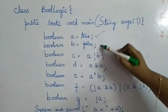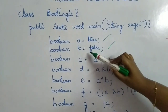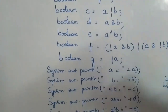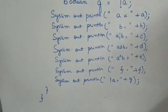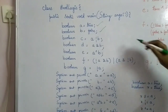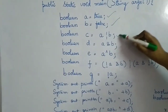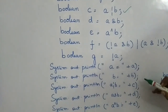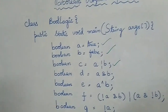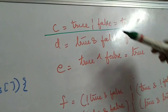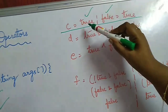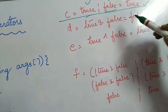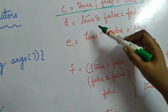I have declared two variables of boolean type: A is holding true and B is holding false. We performed all operations on these boolean operands. For variable C, it is A OR B — the value of A is true and B is false, so true OR false returns true. So C's value will be true.